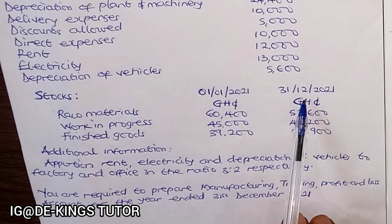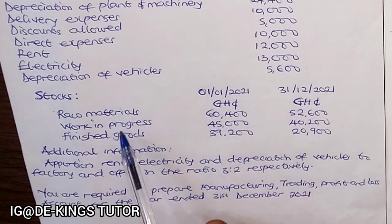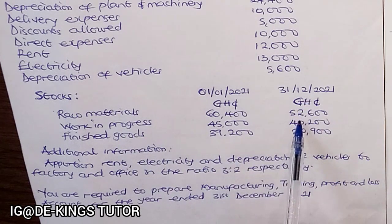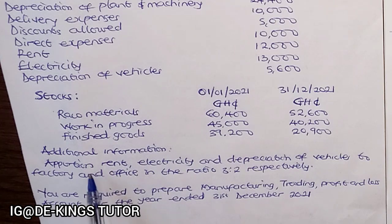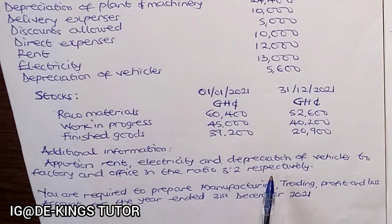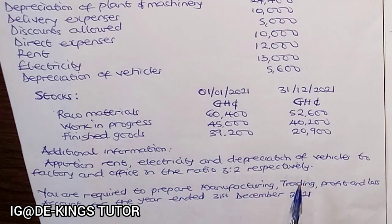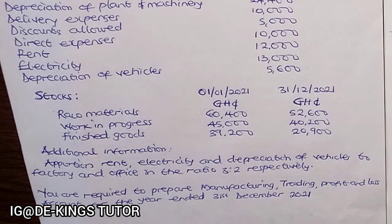The opening stock for 1st January 2021: raw materials 60,400 Ghana cedis, work in progress 45,000 Ghana cedis, finished goods 39,200 Ghana cedis. The closing stock for 31st December: raw materials 52,600 Ghana cedis, work in progress 40,700, finished goods 2,900. Additional information: apportion rent, electricity, and depreciation of vehicles to factory and office in the ratio three to two respectively.